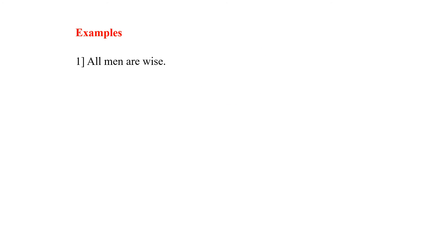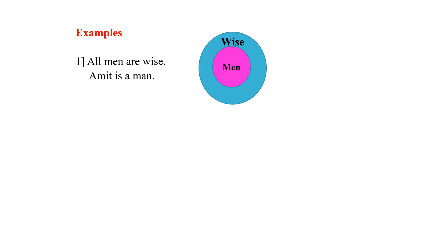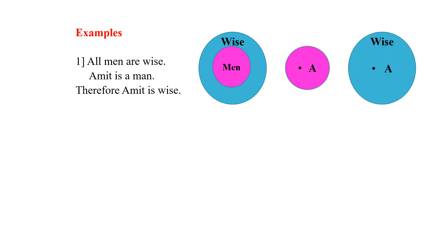Let us take a few examples. All men are wise. We have here the class of wise — the wider class — and the narrow class, the class of men. Then Amit is an individual. Amit is a man, so Amit belongs to the class of men. Therefore, you conclude that Amit is wise. The content of this argument is: the wider class 'wise,' the narrow class 'men,' and the individual 'Amit.'